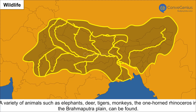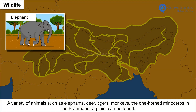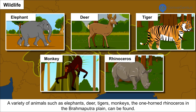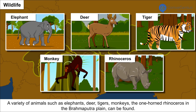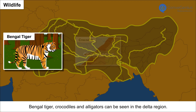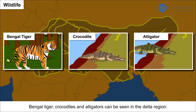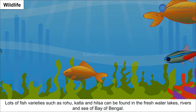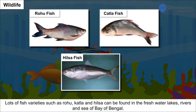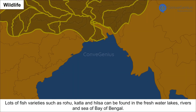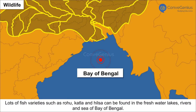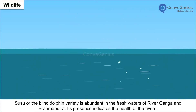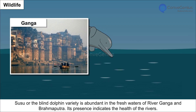Wildlife. A variety of animals such as elephants, deer, tigers, monkeys and the one-horned rhinoceros can be found in the Brahmaputra Plain. Bengal tiger, crocodiles and alligators can be seen in the delta region. Lots of fish varieties such as rohu, katla and hilsa can be found in freshwater lakes, rivers and the sea of the Bay of Bengal.